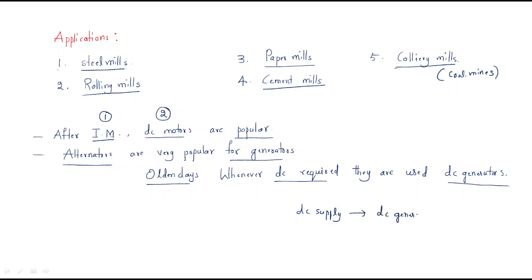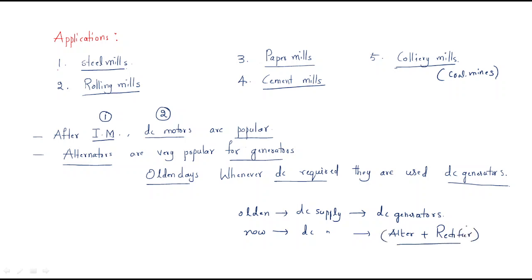In the initial days, DC generators were used. But nowadays, if you want DC supply, we use an alternator connected with a rectifier, so the AC supply is converted into DC. This method has less losses compared to the older approach, which is why it is preferred.